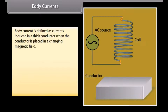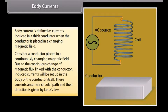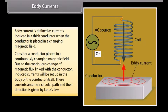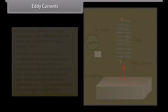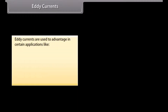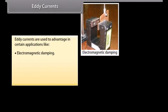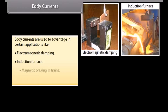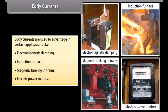Eddy currents are defined as currents induced in a thick conductor when the conductor is placed in a changing magnetic field. Due to continuous change of magnetic flux linked with the conductor, induced currents are set up in the body of the conductor itself. These currents assume a circular path and their direction is given by Lenz's law. Eddy currents are used to advantage in applications like electromagnetic damping, induction furnace, magnetic braking in trains, and electric power meters.